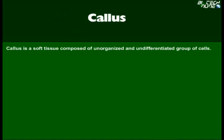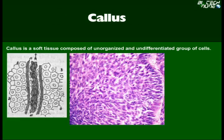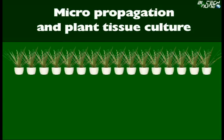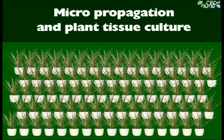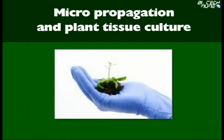Callus is a soft tissue composed of an unorganized and undifferentiated group of cells. Micropropagation and plant tissue culture are used to produce a large number of plants from small pieces of stock plant in relatively short periods of time.